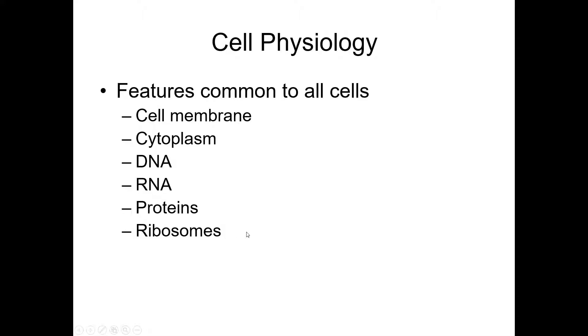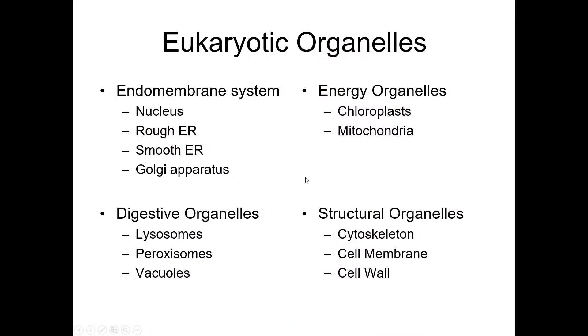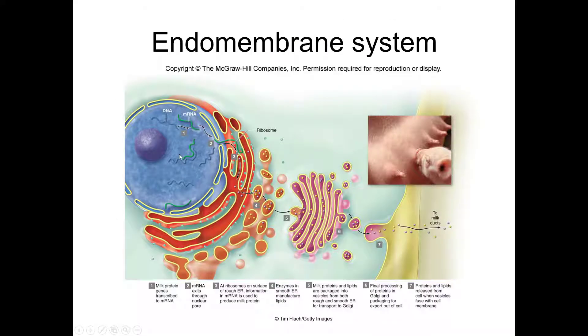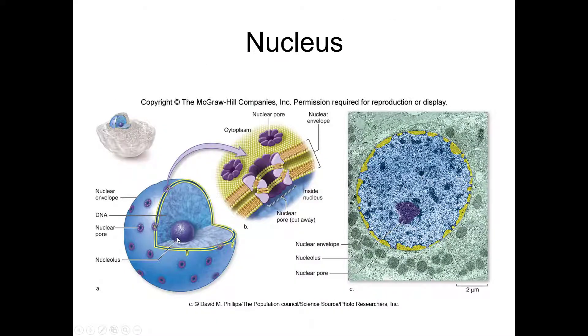So make sure you know these six. Sometimes I may say which of the following is a feature that is only found in eukaryotic cells. Generally when I do that one, I do the nucleus because that is one of the defining characteristics of a eukaryotic cell. Prokaryotic cells do not have a nucleus.